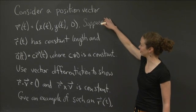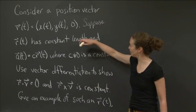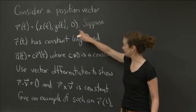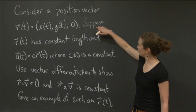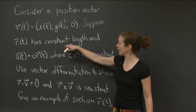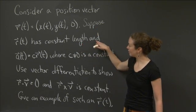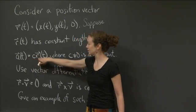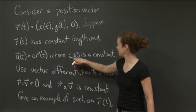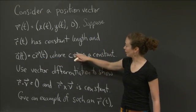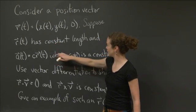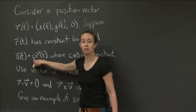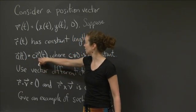We're going to consider a position vector described by x(t), y(t), 0 — I want to have it in 3-space so I can take a cross product later. We're going to suppose that it has constant length, and that the acceleration vector a(t) is actually equal to a constant times r(t), where the constant is not zero. So these are the two things I know about this position vector: it has constant length for all t, and the acceleration is always equal to some constant times the position.